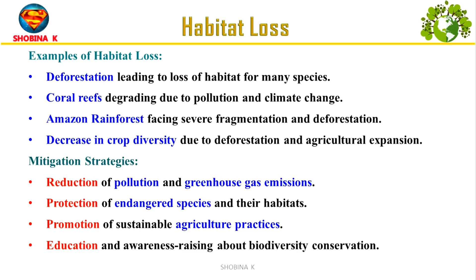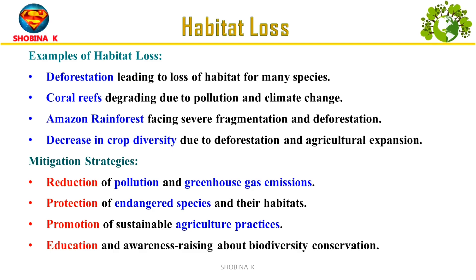Mitigation strategies for habitat loss include implementing policies to reduce pollutants and greenhouse gas emissions, enacting laws and conservation measures to safeguard vulnerable species and their ecosystems, encouraging farming methods that conserve biodiversity and minimize environmental impacts, and educating the public, policymakers and stakeholders about the importance of biodiversity conservation.